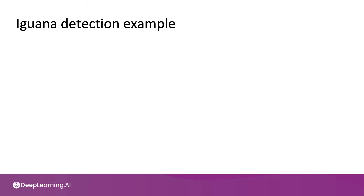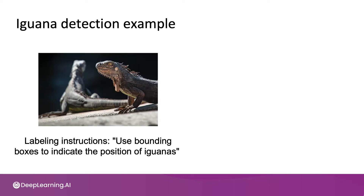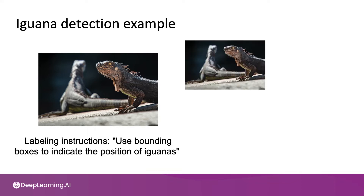I'm going to use the example of detecting iguanas. One of my friends really likes iguanas, so I have a bunch of iguana pictures floating around. Let's say that you've gone into the forest and collected hundreds of pictures like these, and you send these pictures to labelers with the instructions: please use bounding boxes to indicate the position of iguanas. One labeler may label it like this and indicate one iguana, two iguanas — this labeler did a good job.